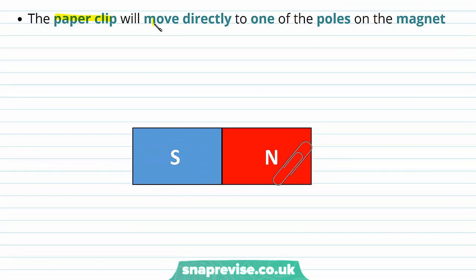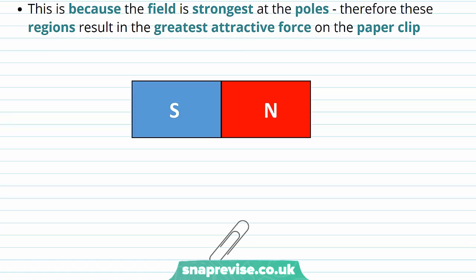This paper clip is going to move directly to one of the poles on the magnet. And we see that it has moved from its initial position up onto the pole of the magnet. And this is because the field is strongest at the poles. And therefore these regions result in the greatest attractive force on the paper clip.